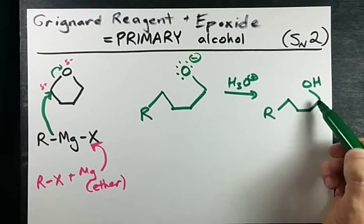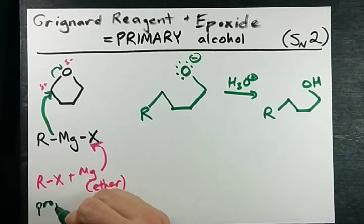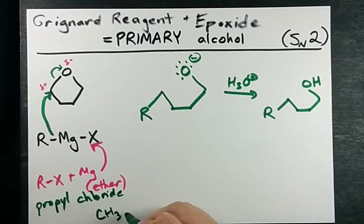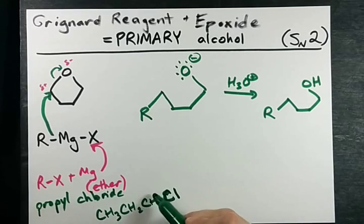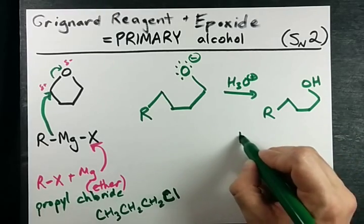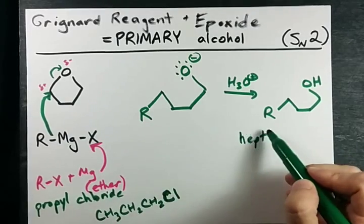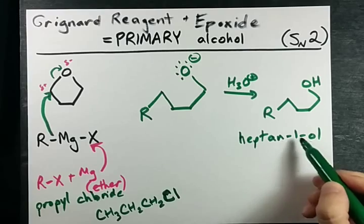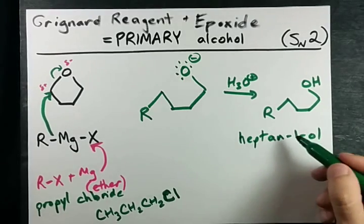Four carbons are added to the R chain. If this had been propyl chloride — that's CH₃, CH₂, CH₂, Cl — we are adding three carbons to the chain, which makes this hept-. That's four plus three makes seven carbons. In this chain it has to be a 1-ol, because it's on carbon one — you asked for primary alcohols, so it's always position one.